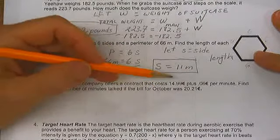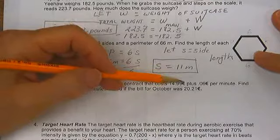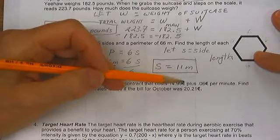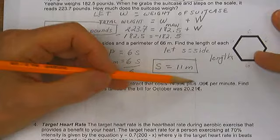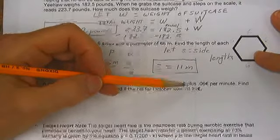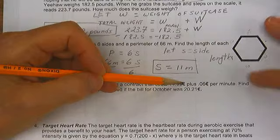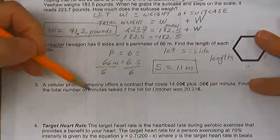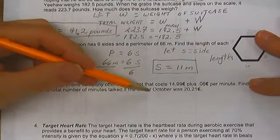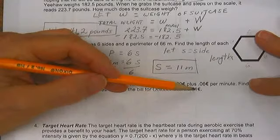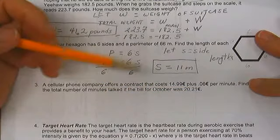And that is the symbol. It looks like an epsilon. The parallel lines signify the equality and strength of the European Union. Find the total number of minutes if the bill for October was 20.21 euros.